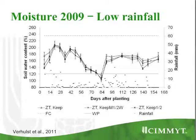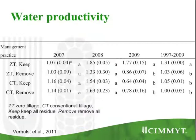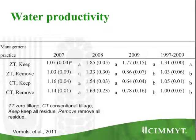Comparing CA practices where we leave all the residue with those where we only leave partial residue, the soil moisture looks almost the same. This is expressed in water productivity: between 2007, 2008, and 2009, zero till without residue is always the lowest and zero till keeping residue is always the highest.